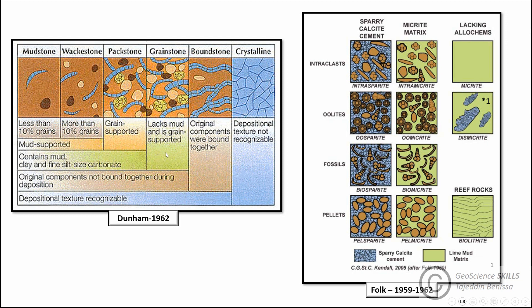On the other hand, Dunham 1962 classification is based on the ratio of grains to matrix, regardless of the type of matrix. It starts from mudstone, where grains or fossils occupy less than 10% of the sample area and 90% is matrix or micrite. As grain number increases, the rock transitions from mud-supported types like mudstone and wackestone to grain-supported packstone and grainstone.